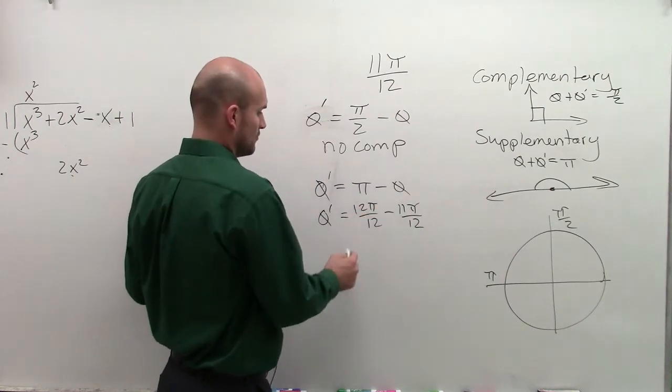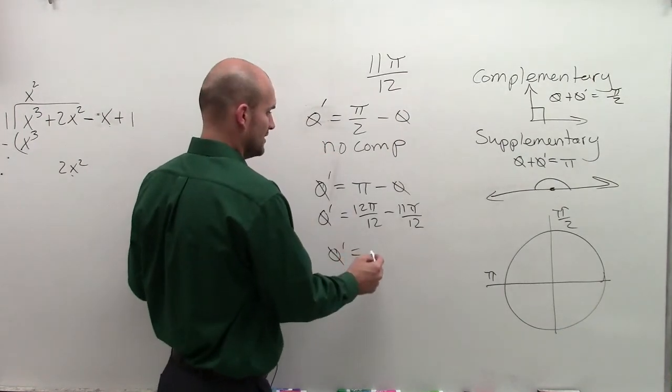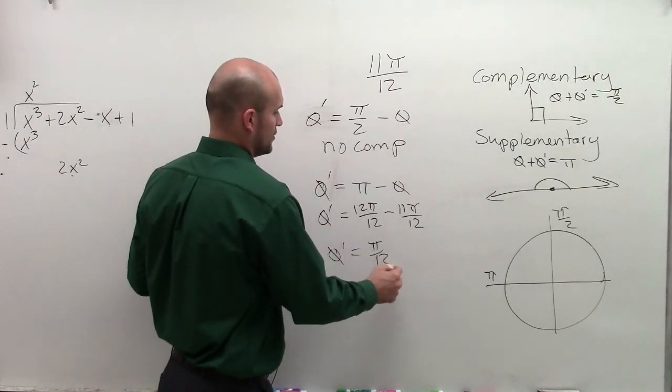12 minus 11 is 1 pi. So therefore, the supplementary angle of 11 pi over 12 is pi over 12.